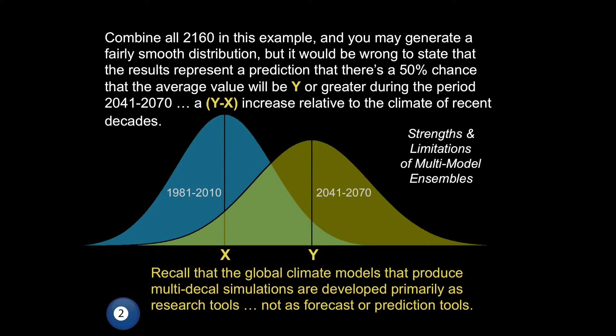Those emission scenarios have no likelihood associated with them. They're low, medium, and high — no one said one is more likely than another or that they're equally likely. They're just representative emission scenarios. And those different global climate models you downloaded aren't independent either. A study looking at about 25 models suggested maybe there were only eight to ten truly independent ones — a lot of them share DNA, they have a common pedigree. So don't treat it, as tempting as it is, like a probability density function. You have a range, a sample, an envelope of possibilities — but it's not a prediction about probabilities.